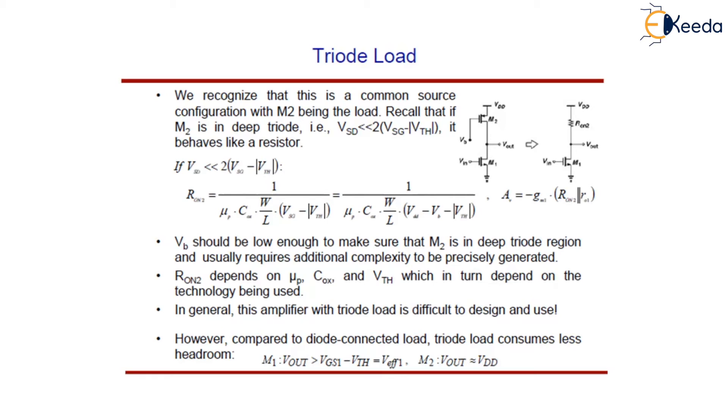So among the five variants we've seen now, those employing biased current source are found to have wider usage than the triode load. Thank you.